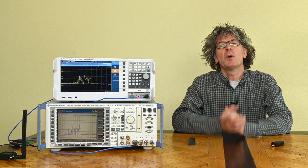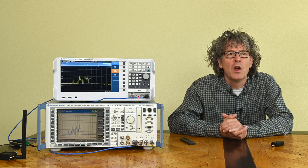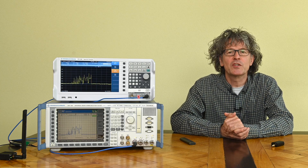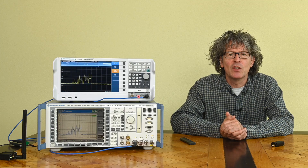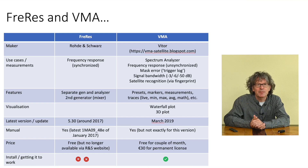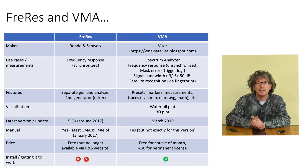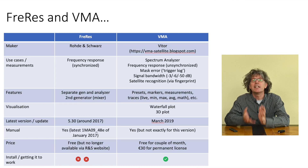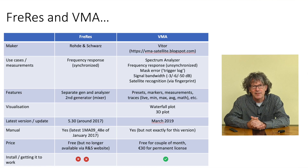I would like to test both pieces of software, show you what you can do with them, and tell a little bit more about the background. First, let me discuss what these programs are and for what you would be considering to use them. FreeRes by Rohde & Schwarz is a piece of software that basically allows you to do frequency response analysis. You can analyze a device under test — and that's basically it. It's not designed for any other functionality than that.